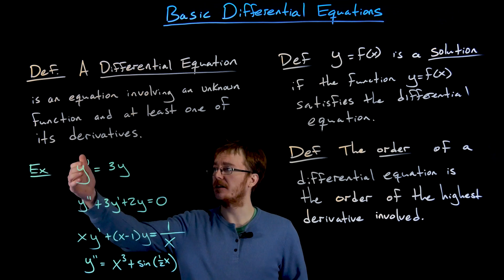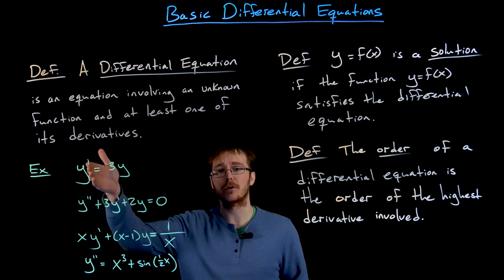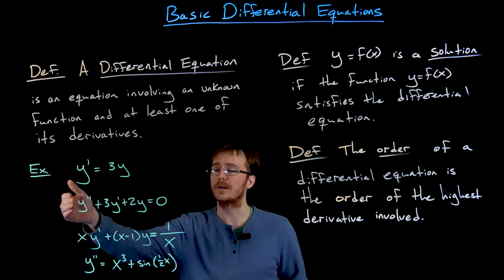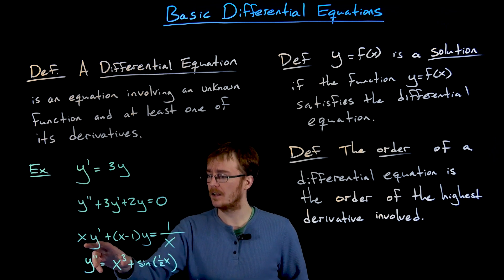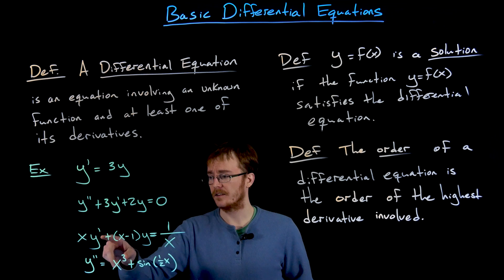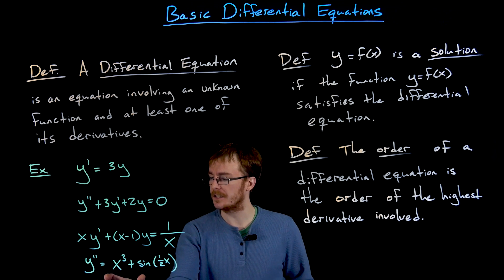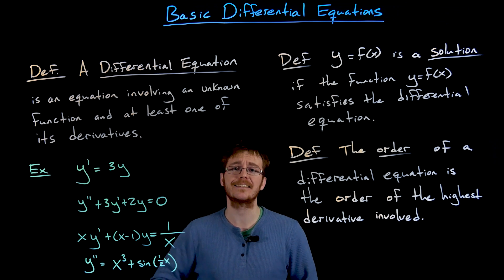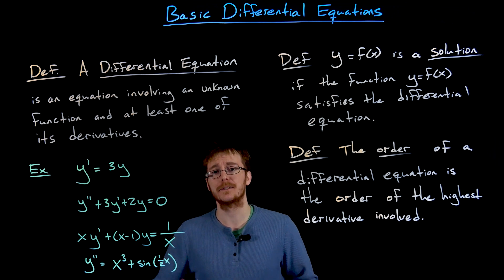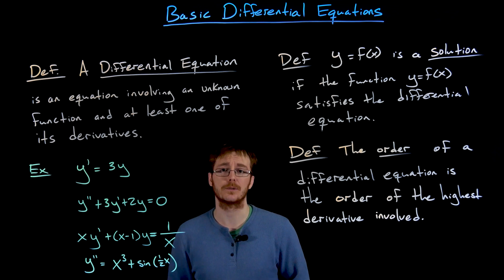Looking at our four examples: in the first example the highest derivative is y prime, so that's a first-order differential equation. The second example is a second-order differential equation. In the third example, scanning it, the only derivative involved is the first derivative, so this is another first-order differential equation. The last equation, y double prime equals x cubed plus sine of one-half x, is a second-order differential equation because the only derivative for the unknown function is that second derivative.